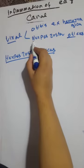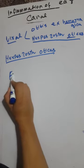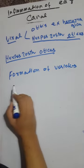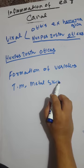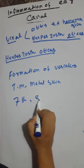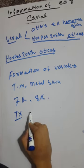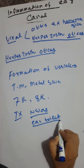The second type of viral inflammation of the ear canal is herpes zoster oticus. It is characterized by the formation of vesicles on the tympanic membrane; the metal skin, concha, and post-auricular region may be involved. The seventh and eighth cranial nerves may also be involved. Treatment includes analgesics for pain, ear toilet to clean the ear, and antibiotics for secondary infection. These vesicles must be removed.